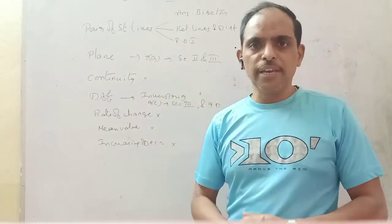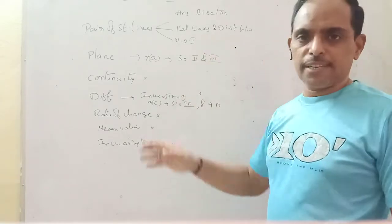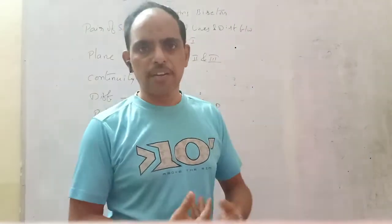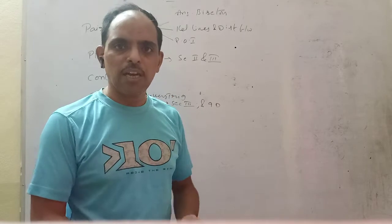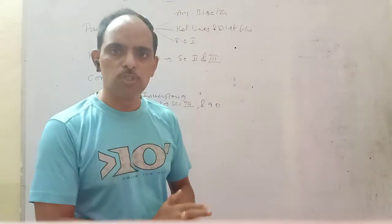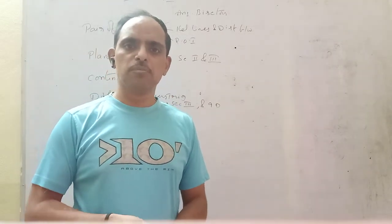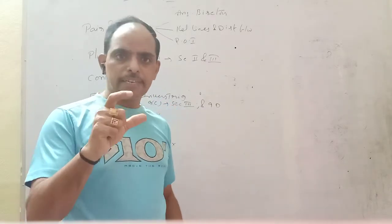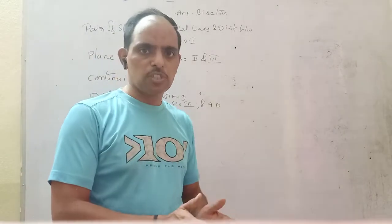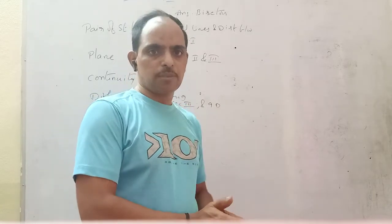In exercise 4B, the following are reduced: distance between the parallel lines, the condition for parallel lines h-squared equals ab, and the formula 2 into root of g-squared minus ac, divided by a into a plus b. That content and its related theorem proof and related problems are reduced.